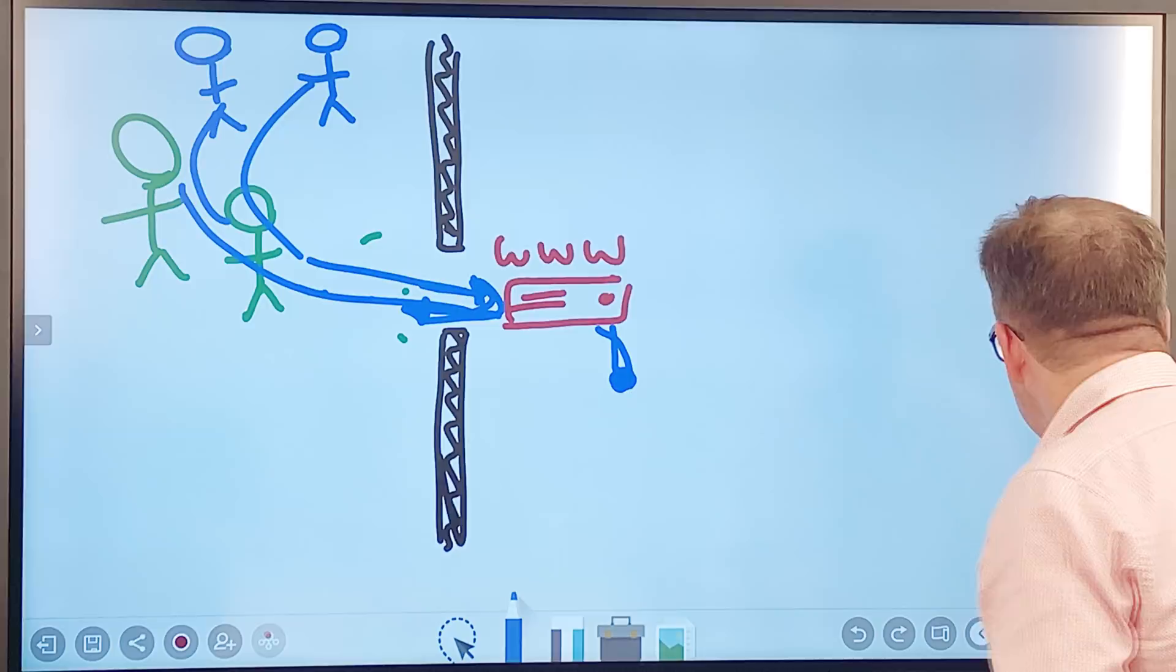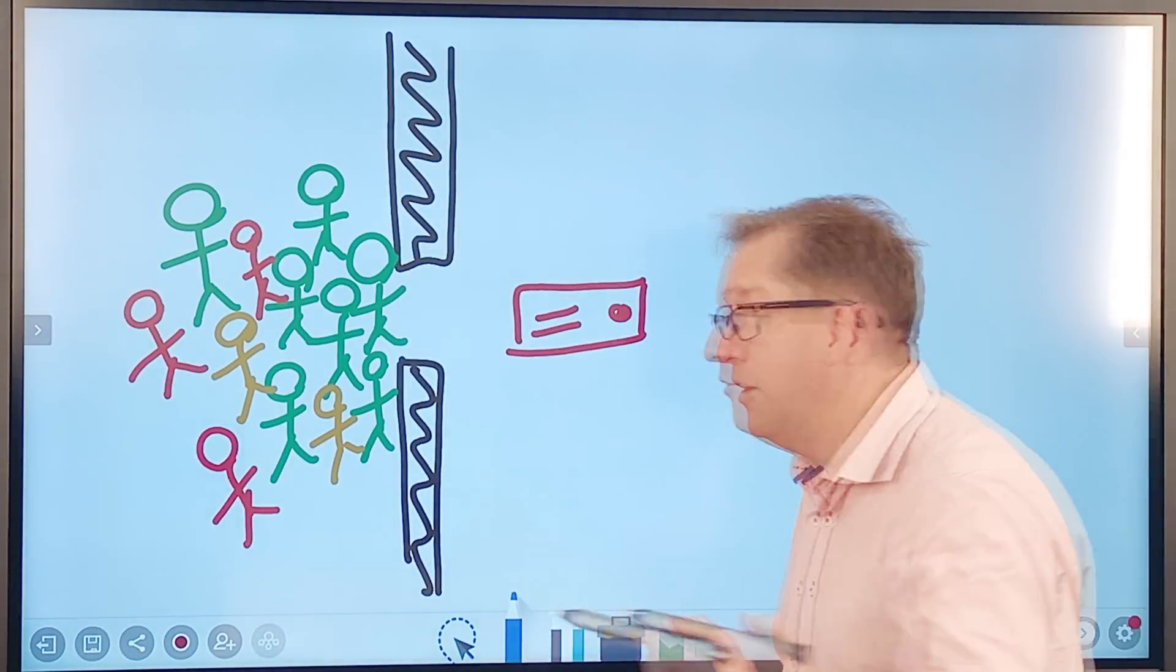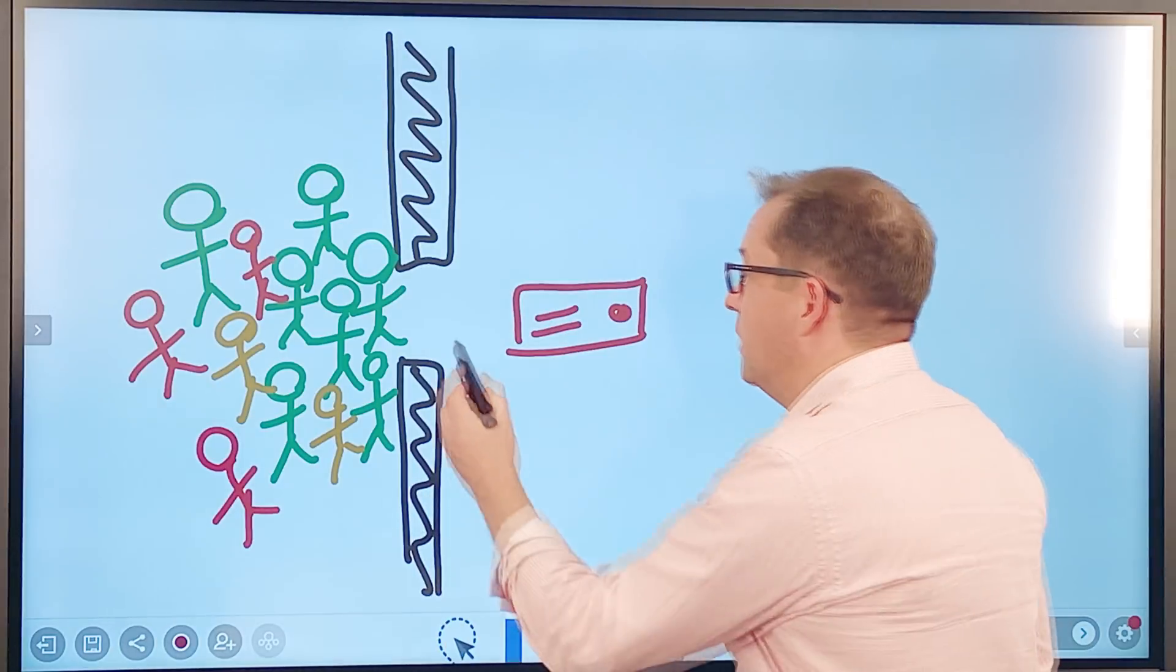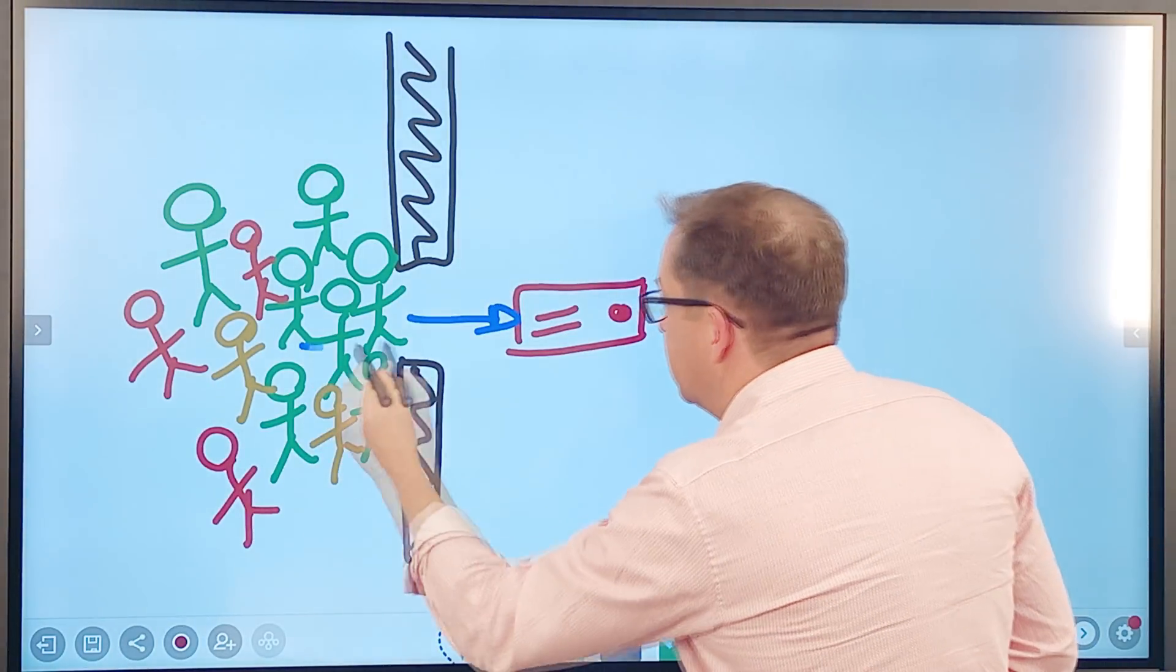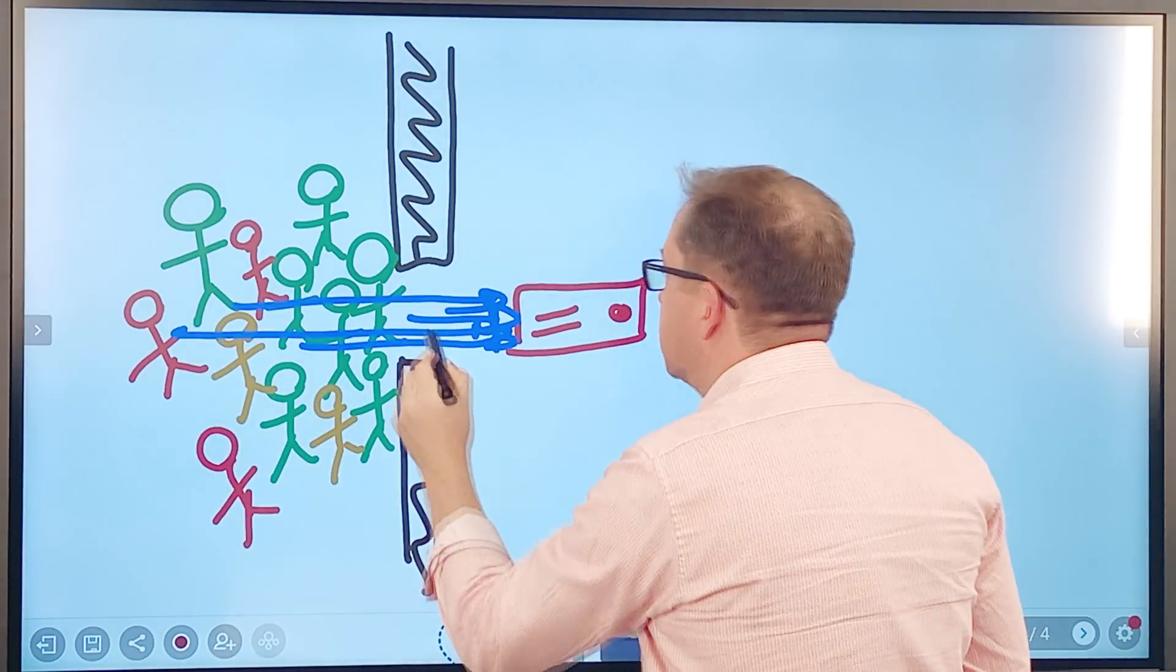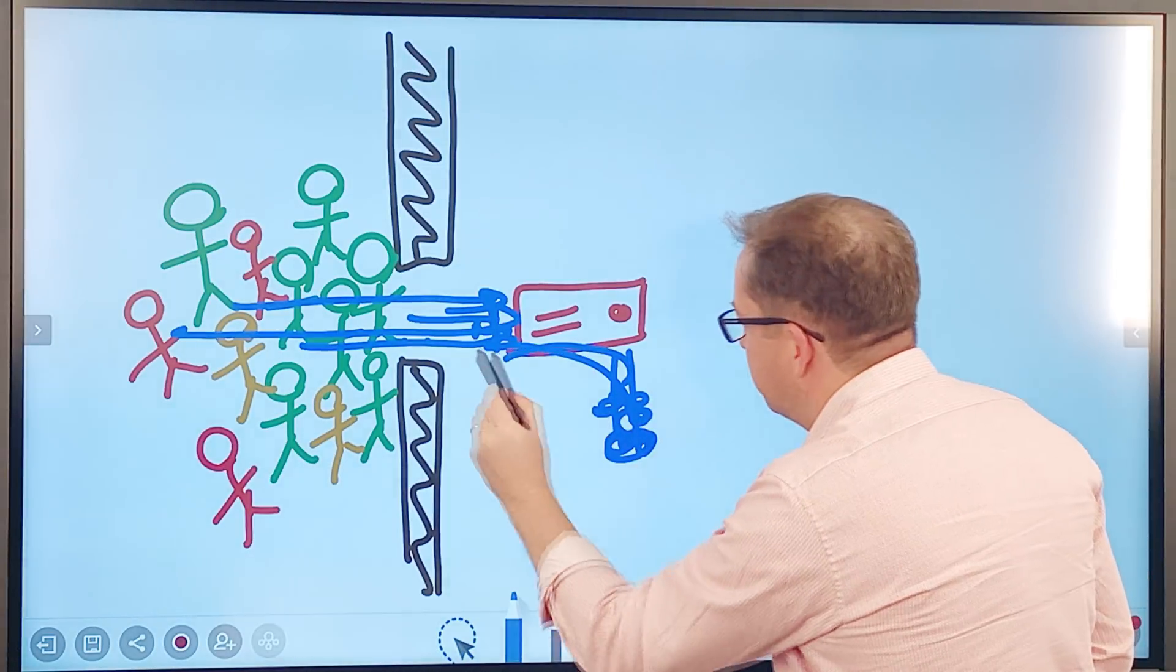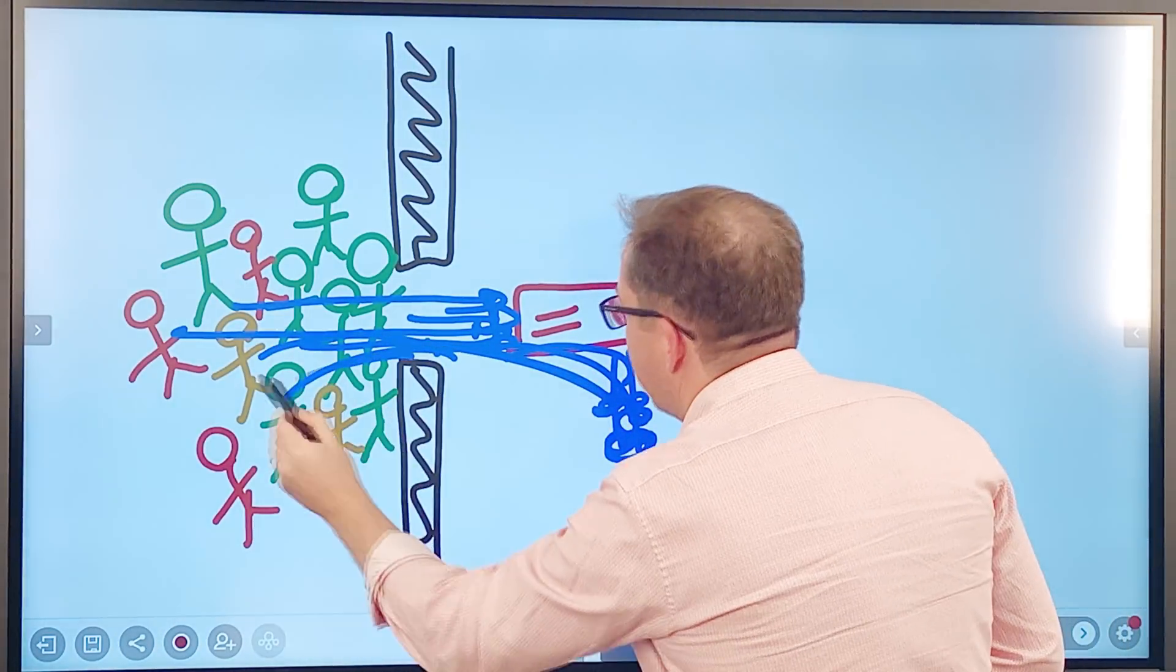However, when you start to go and look at this scenario of everyone coming to the door at once and asking, this person's asking, this person's asking, everyone's asking all the time. This server has to go down and do some stuff over here and then feed it back back to the crowd.